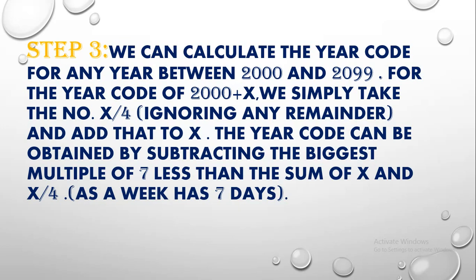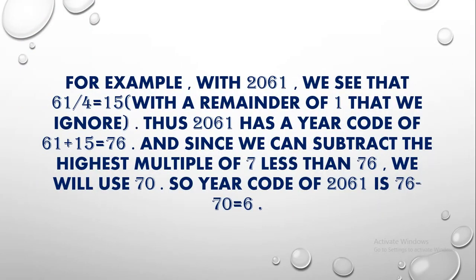Step three: we can calculate the year code for any year between 2000 and 2099. For the year code of 2000 plus x, we simply take x divided by 4 (ignoring any remainder) and add that to x. The year code is obtained by subtracting the biggest multiple of seven less than the sum of x and x divided by 4.